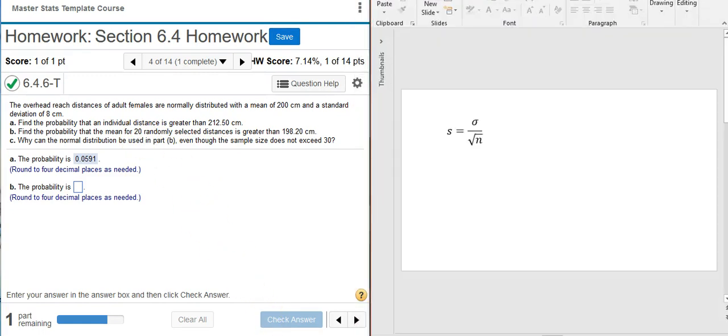The adjustment that we need to make is shown here. We take the population standard deviation that's given to us in the problem, and we divide it by the square root of the sample size. This is an adjustment that we need to make to the standard deviation.